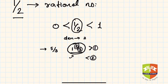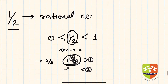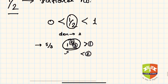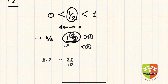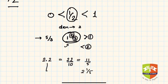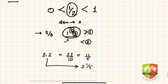Now let us take a decimal number: two point two. Two point two can be represented as twenty-two by ten. This reduces to eleven upon five when you cancel two from numerator and denominator, which is nothing but two whole one upon five as a mixed fraction.